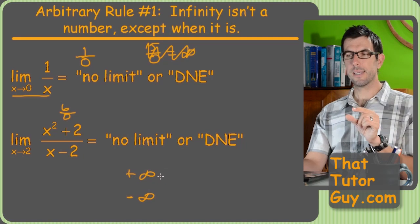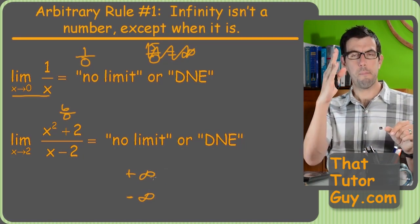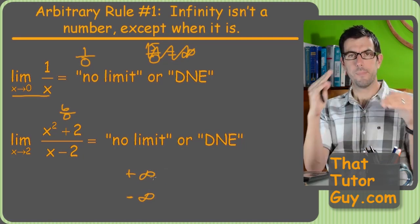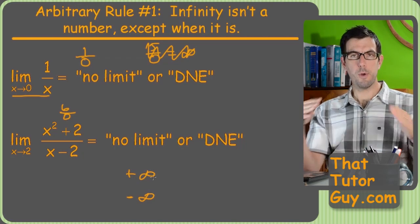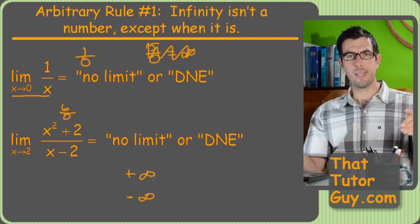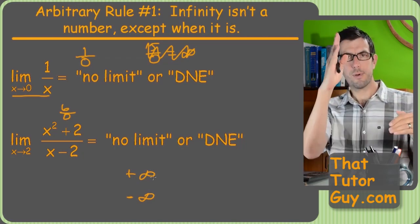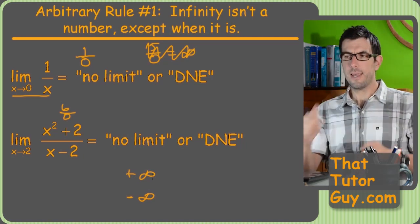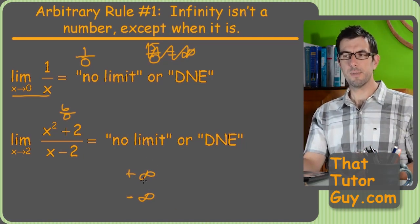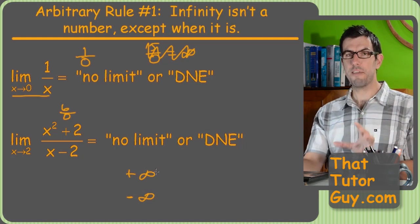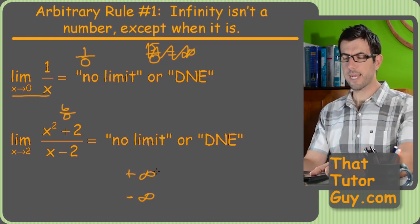If they're asking does the left-sided limit match the right-sided limit, then the question is: are they both not existing in the same direction, or is one not existing upwards and one's not existing downwards? And that's what this plus infinity minus infinity business is. But still, the limit does not exist if you're dividing by zero, ipso facto.